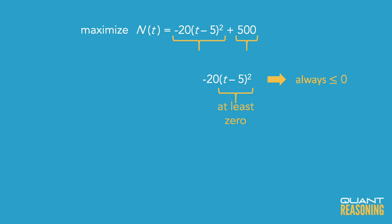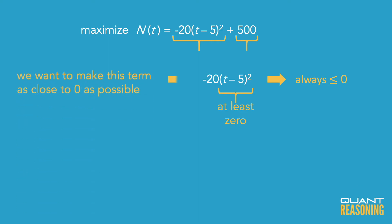So if we're trying to maximize the whole expression, and we know that the 500 can't be touched, then we'd want the first term to be zero. If we can make that negative 20 times the square of t minus 5 — if that whole thing could be zero...